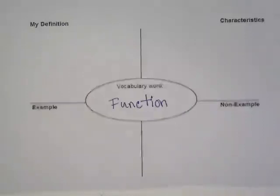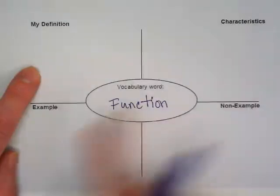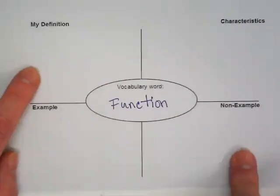I want you guys to think there's something special about functions that they have that all relations don't have, just like squares have all four sides the same. So that thing is going to show up in our definition, and then we're going to see how we check for it or how we visualize it in our examples, non-examples, and characteristics.